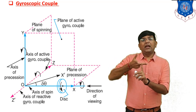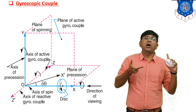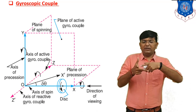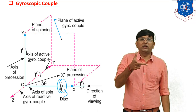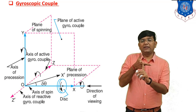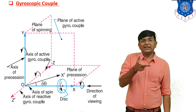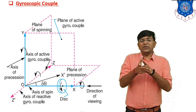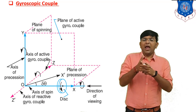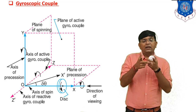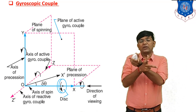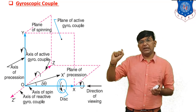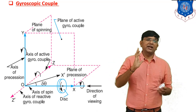The first axis is the axis of spin — the rotor rotates about the axis of spin. The second axis is the axis of precession, which is the vertical axis. Whenever you change the position of the axis of spin in the left or right direction about the vertical axis, that vertical axis is known as the axis of precession. The third axis is the axis of gyroscope.